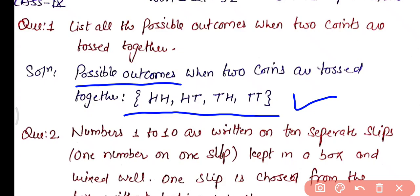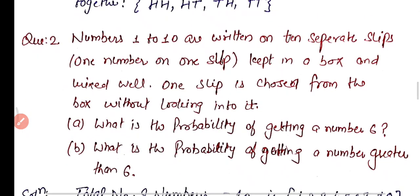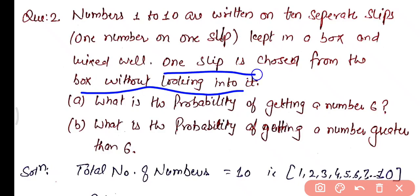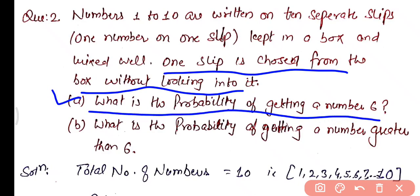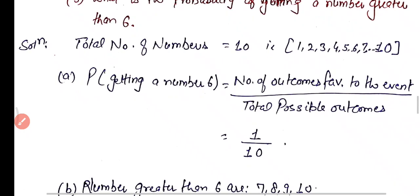In the second question, numbers 1 to 10 are written on 10 separate slips — one number on one slip — kept in a box and mixed well. One slip is chosen from the box without looking into it. What is the probability of getting the number 6? And what is the probability of getting a number greater than 6?